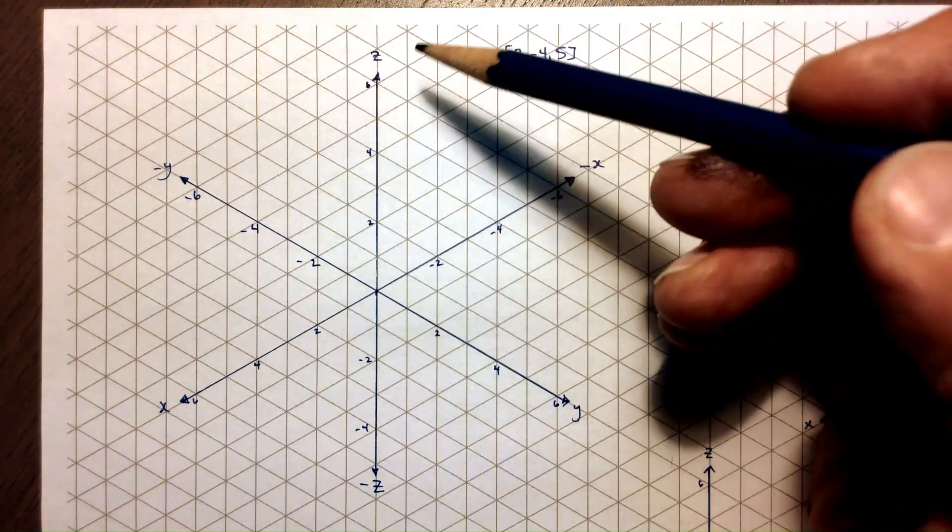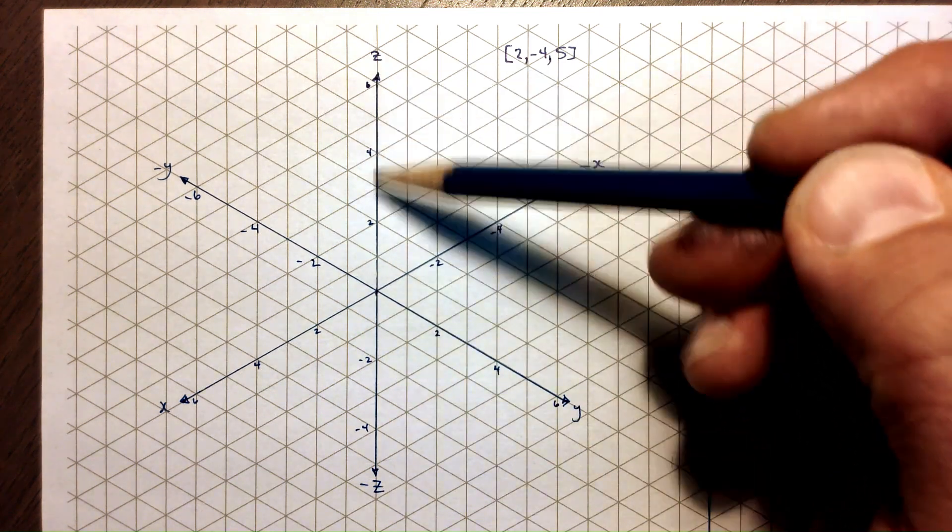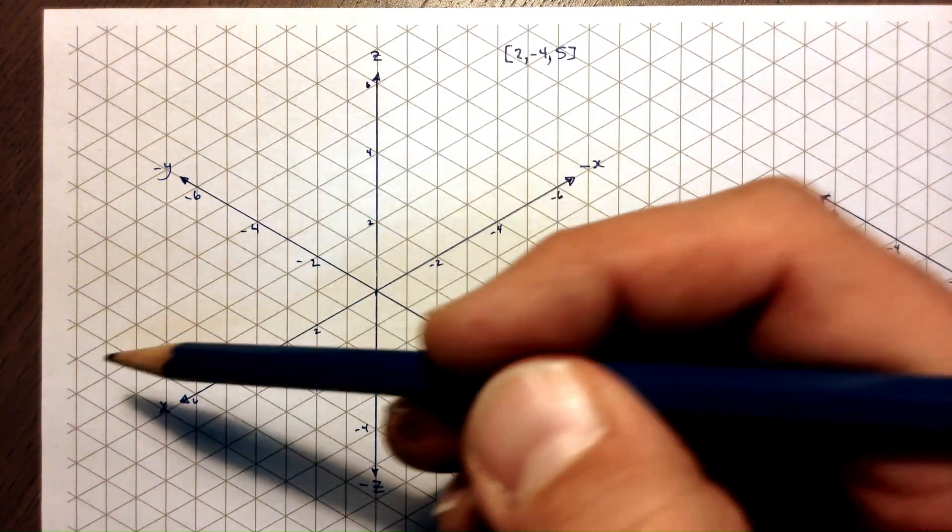You can see here I've already got my grid labeled. We have a vertical line here, and with isometric paper there's only one line that's sort of perpendicular to the edge of the page. You'll see the other ones are on diagonals here.